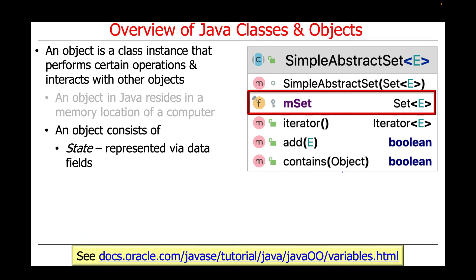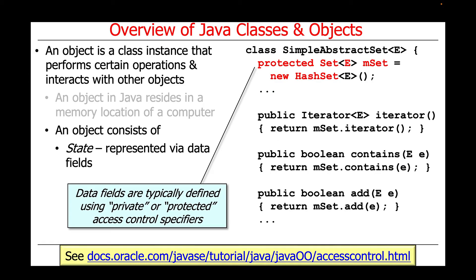An object consists of several things. First, it consists of state, which is represented by data fields. For example, in the context of our SimpleAbstractSet class, the MSET field stores the particular type of collection, be it a hash set, a tree set, a concurrent hash set, and so on. Data fields are typically defined as either private or protected using access control specifiers. Private means they are not visible to clients. Protected means they're not visible to clients, but they are visible to subclasses that extend from the superclass.